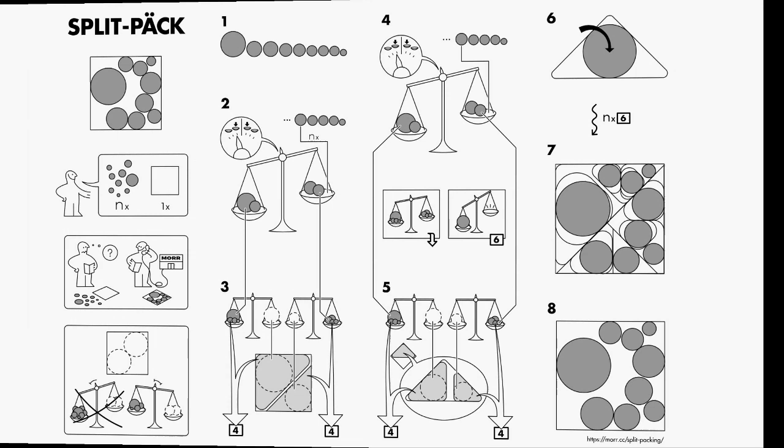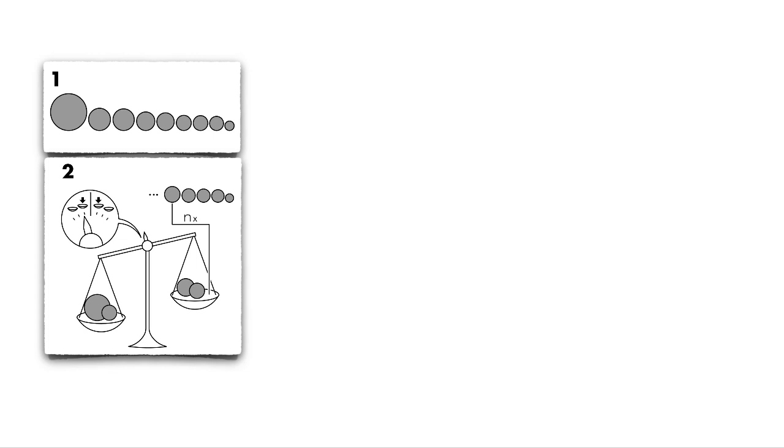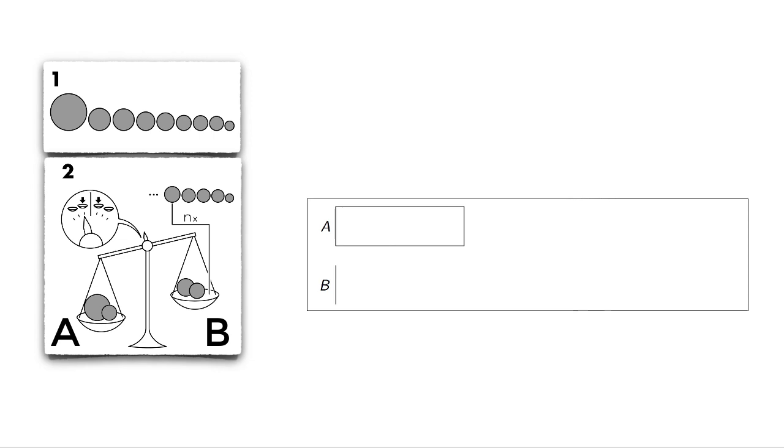Here is a symbolic overview of his split-packing algorithm. The idea is to sort the circles by decreasing size. Then split them into two subsets A and B of nearly the same total area, based on a greedy, balanced partition.